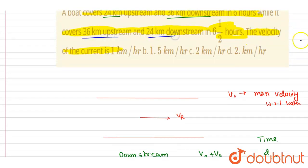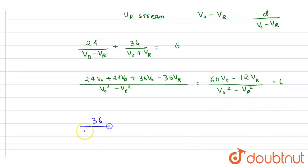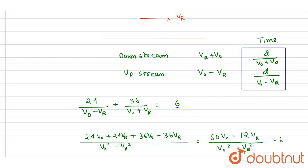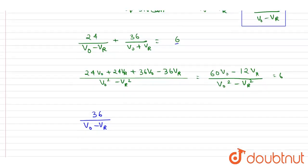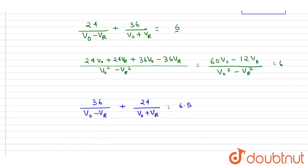For the second case, upstream distance is 36 km and downstream is 24 km, with total time 6.5 hours. We write the time for upstream and downstream using the same formula and set their sum equal to 6.5 hours.